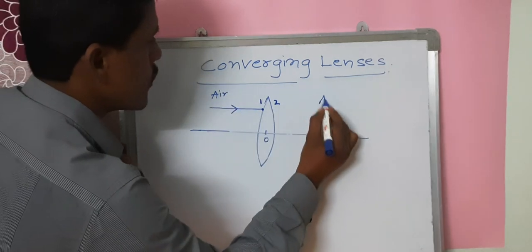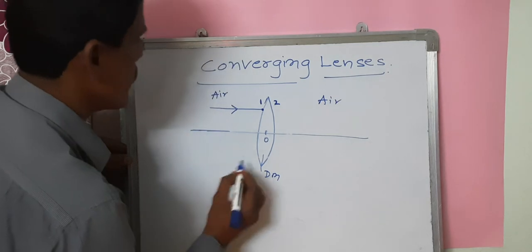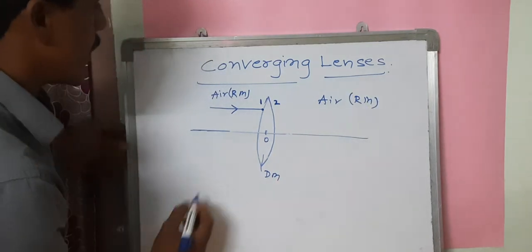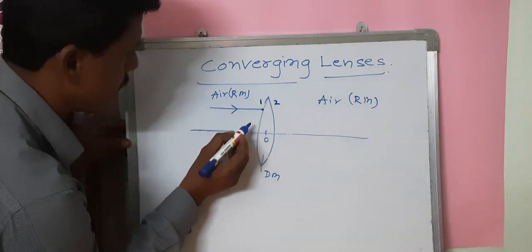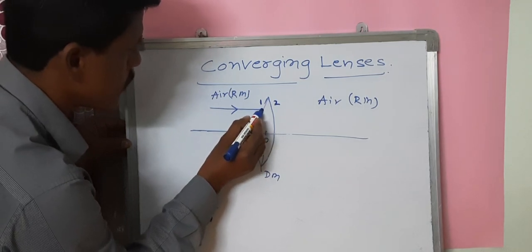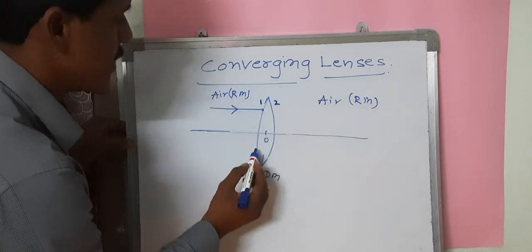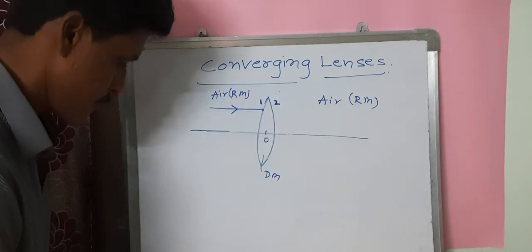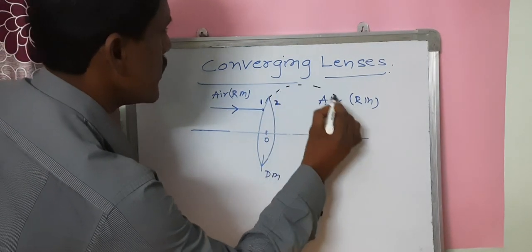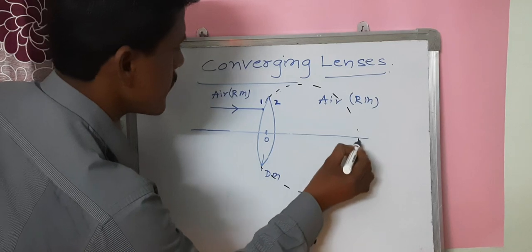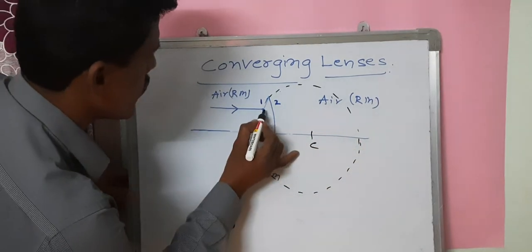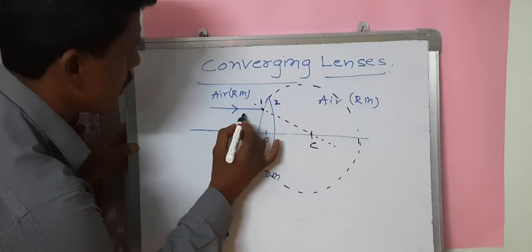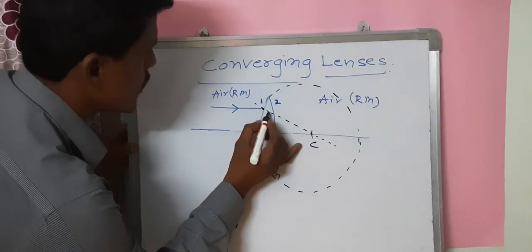The air is the medium on both sides — a rarer medium. The lens is the denser medium. Light travels from the rarer medium to the denser medium. At the interface between the two mediums, it bends with respect to the normal. To draw the normal, we know that the convex lens is the intersection of two spheres. The normal passes through the center of the sphere. So a light ray traveling from rarer medium air to denser medium lens bends towards the normal.